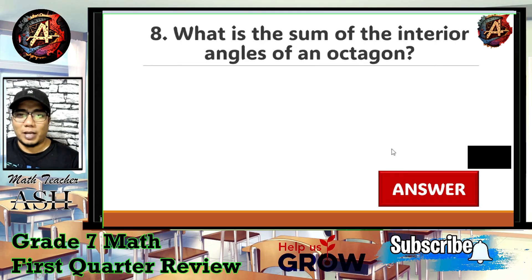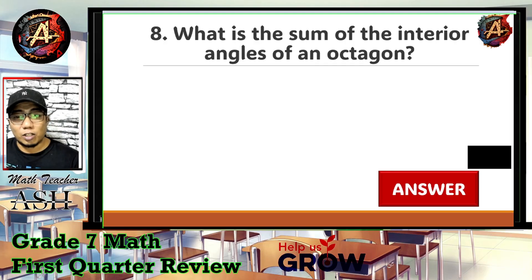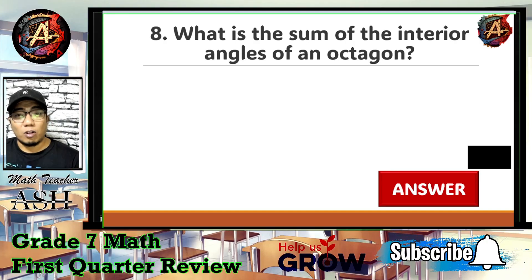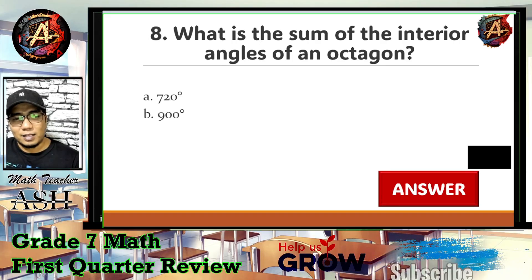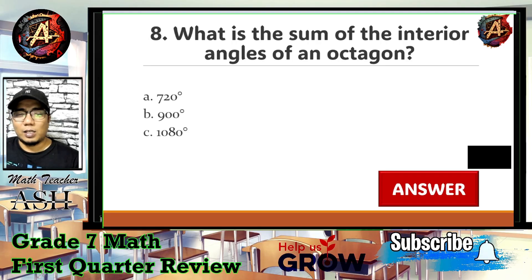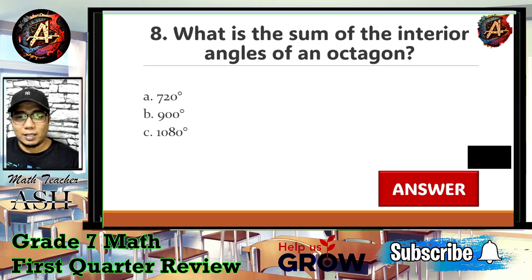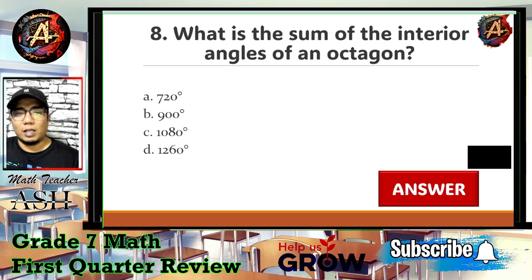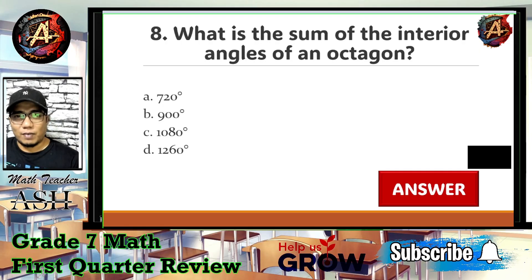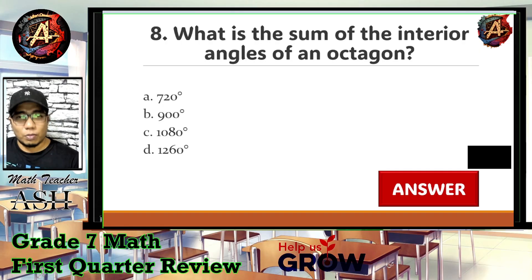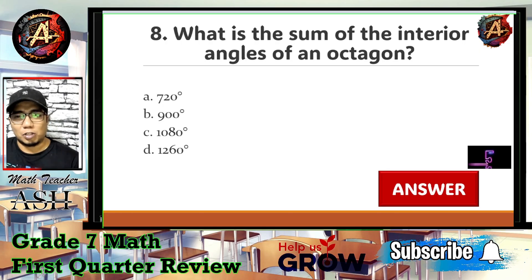Question number eight: what is the sum of the interior angles of an octagon? Is it A) 720 degrees, B) 900 degrees, C) 1080 degrees, or D) 1260 degrees?